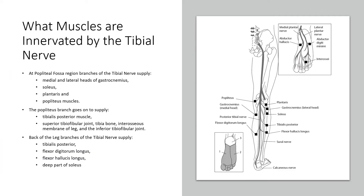So let's start off with what muscles are innervated by the tibial nerve. The tibial nerve is essentially an extension of your sciatic nerve. If you look on the right-hand side, this is your sciatic nerve as it comes out of your hip. It travels down the back of the knee and then splits — one branch is your common peroneal nerve, and the other branch is your actual tibial nerve. That tibial nerve then goes down the back of the leg and eventually into the bottom of the foot.